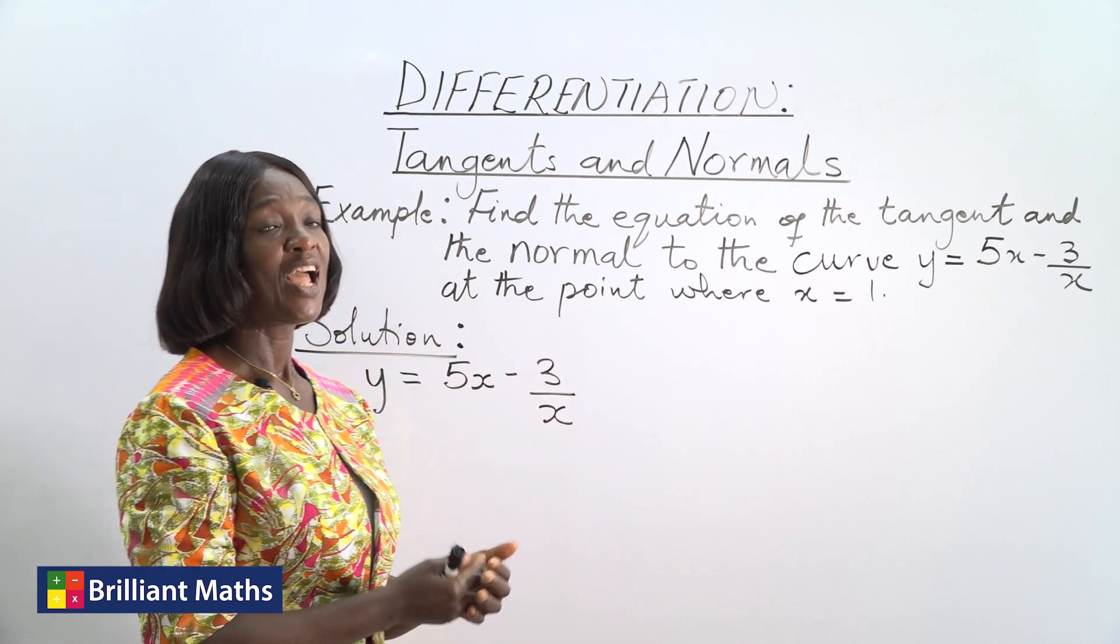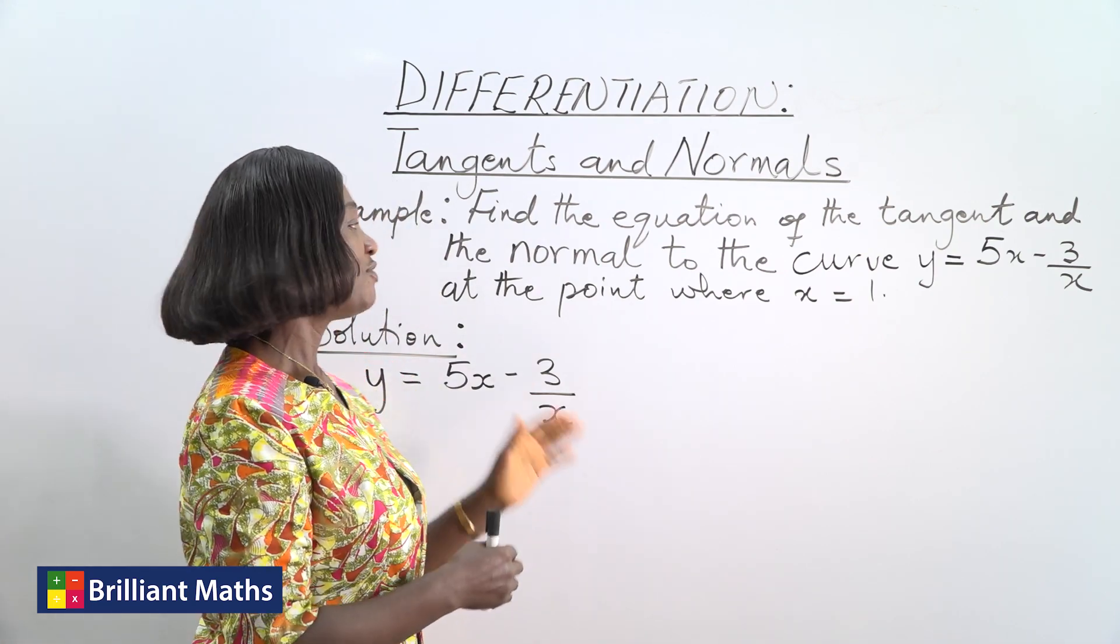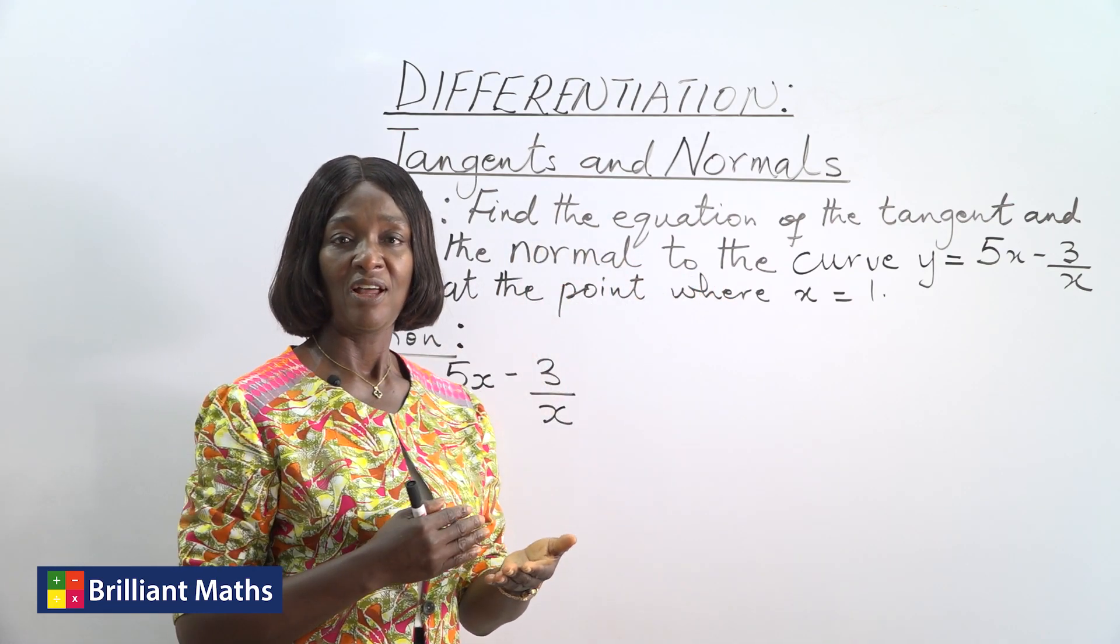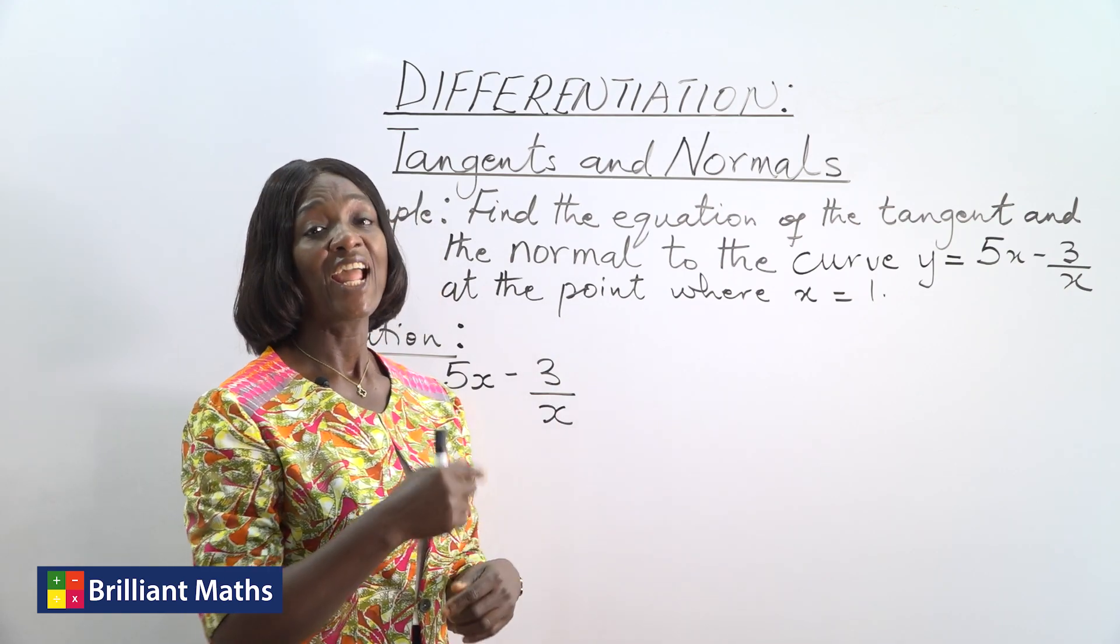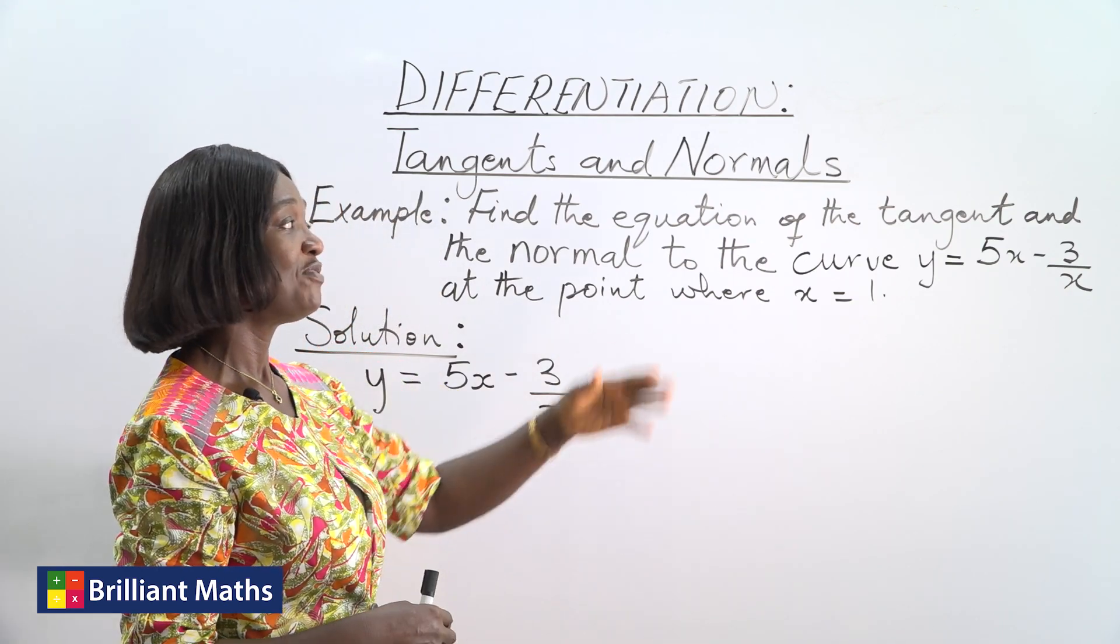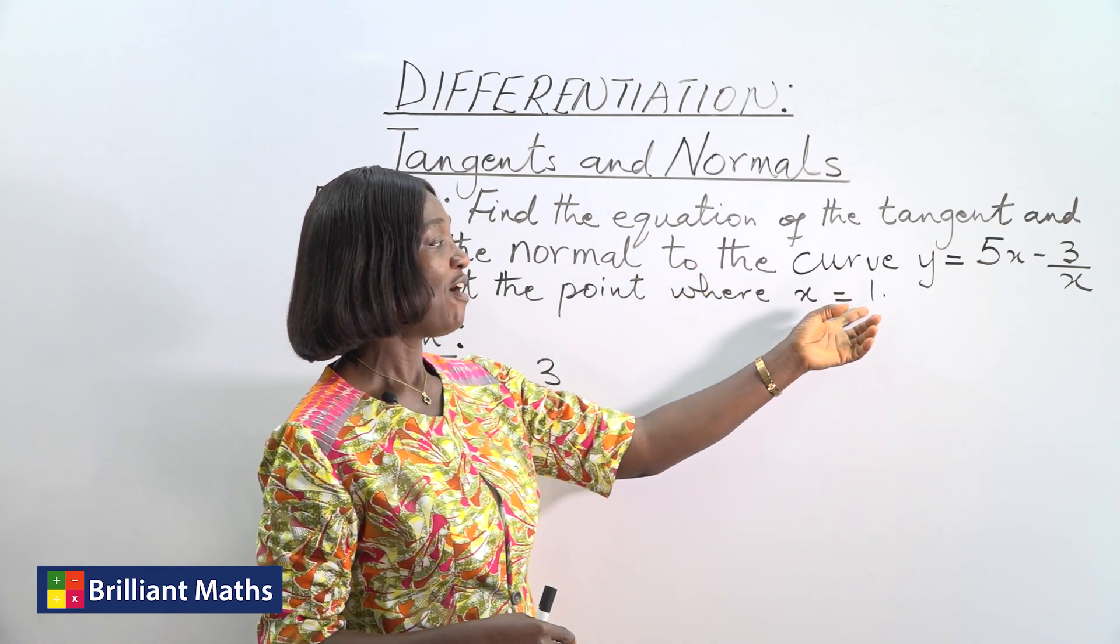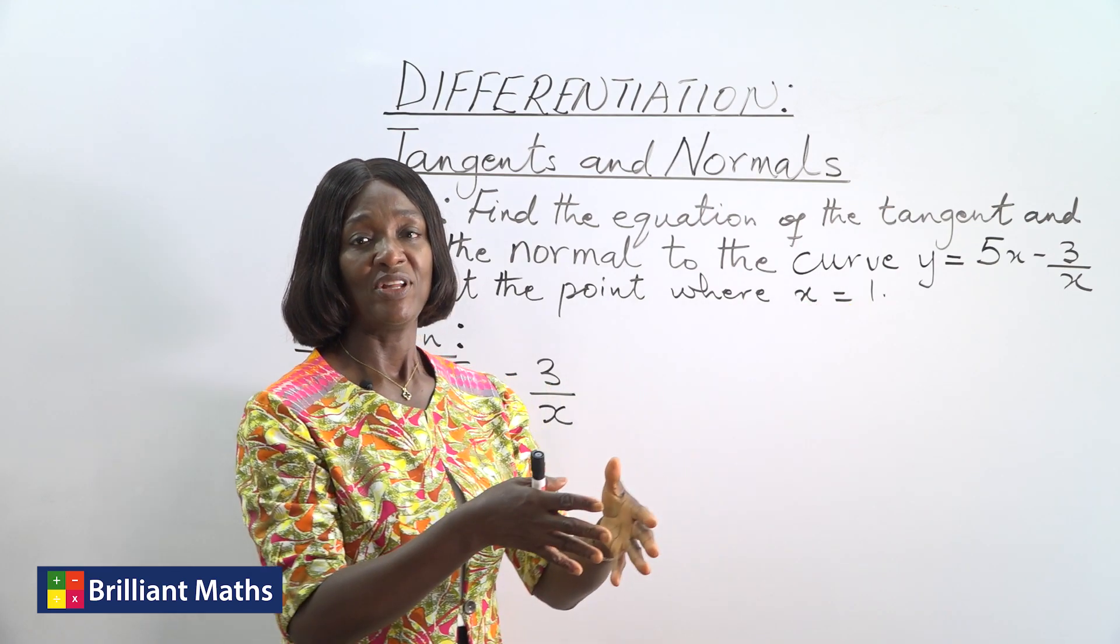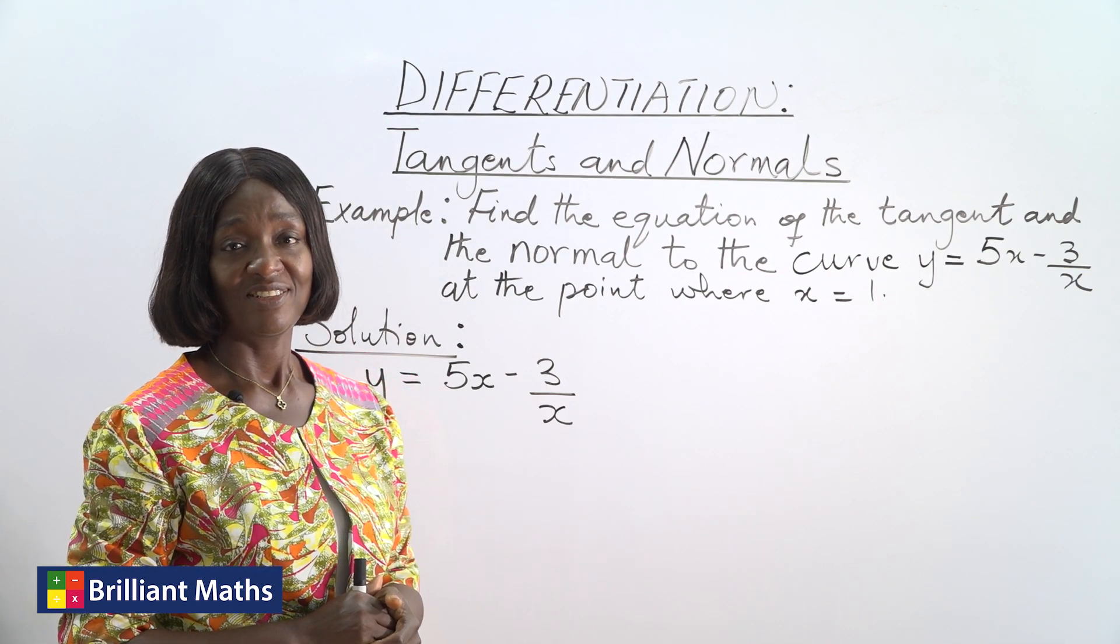And of course, you can use the same gradient to find the gradient of the normal, because the normal and the tangent are perpendicular. So the gradient of the normal will be the negative reciprocal of the gradient of the tangent. You have the point, you have already found the y coordinate of the point. So with the point and the gradient, you can find the equation of both lines.